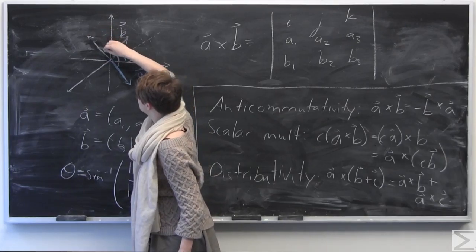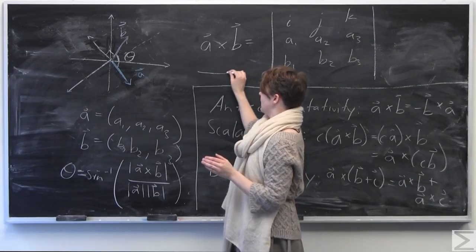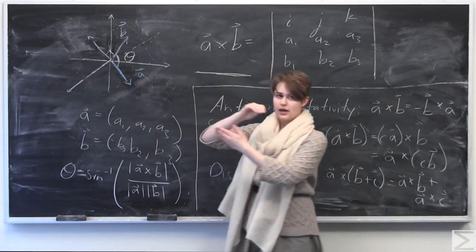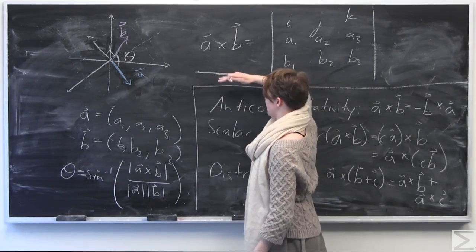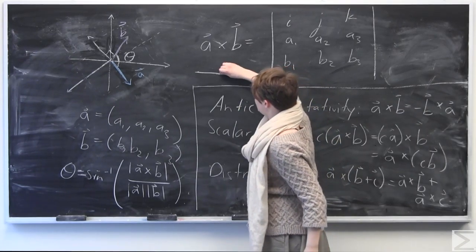So what are we doing when we're taking A cross B? When we're taking A cross B, we're really finding some vector that's orthogonal to the given two vectors, which means that it's kind of poking out of this plane here at an exactly right angle. So if you can imagine we have some kind of plane, if you're looking at the plane here,